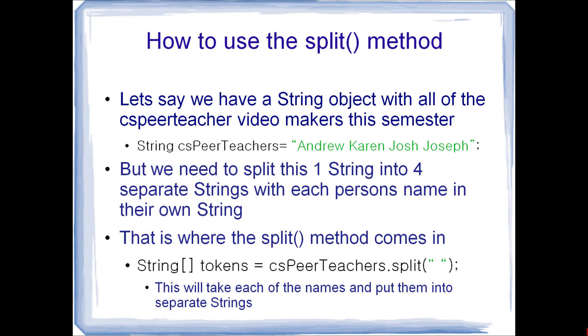So let's say we have this string object with all of the CSPeerTeacher video makers this semester. String CSPeerTeachers equals Andrew, Karen, Josh, Joseph. But we need to split this one string into four separate strings, with each person's name in their own string. That is where the split method comes in.